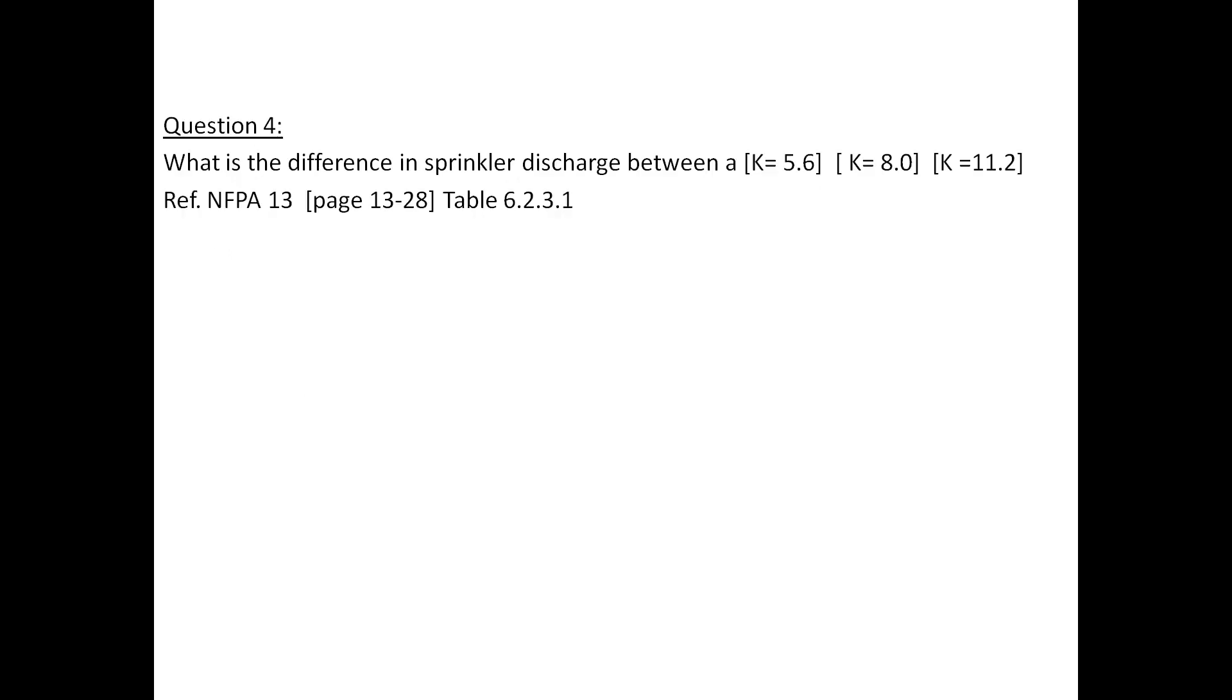Question number 4: What is the difference in sprinkler discharge between a K equals 5.6, K equals 8.0, K equals 11.2, per NFPA 13 page 13-28 table 6.2.3.1? The answer to question number 4 is K equals 5.6 is 100%, K equals 8 is 140%, and K equals 11.2 is 200%.